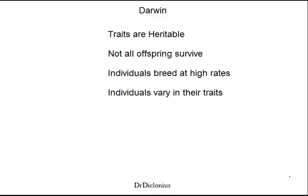Darwin. I'm sure we've all heard of Darwin. He wrote that book, The Origin of Species, back in the 1850s. He really came up with a theory of natural selection and evolution. What kind of led him to this theory was that he had a voyage on the HMS Beagle.